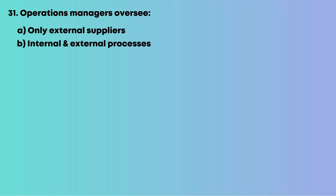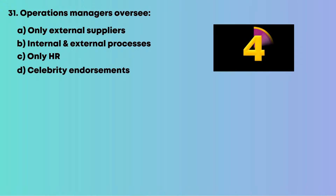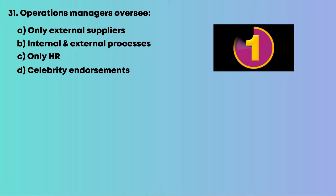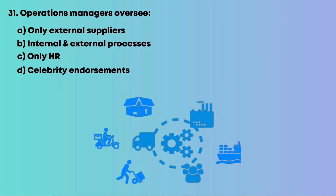Question 31: Operations managers oversee: A, only external suppliers; B, internal and external processes; C, only HR; D, celebrity endorsements. They manage the entire operational chain. The answer is B, internal and external processes.